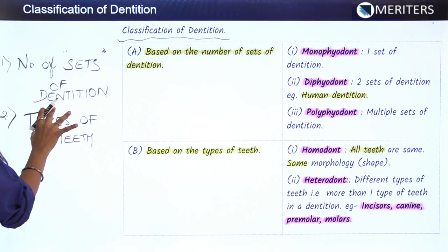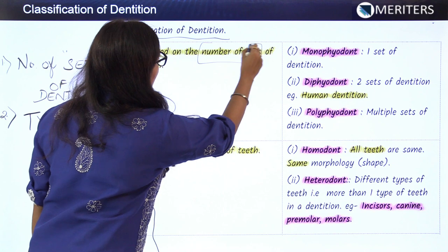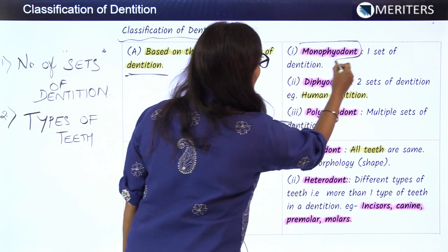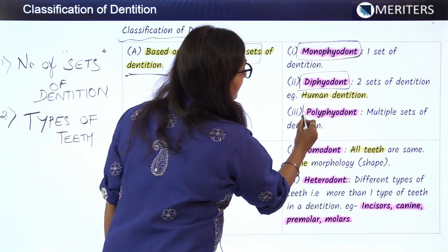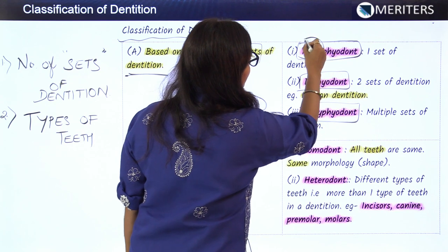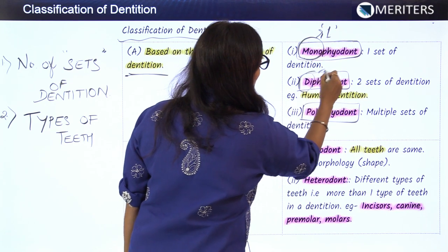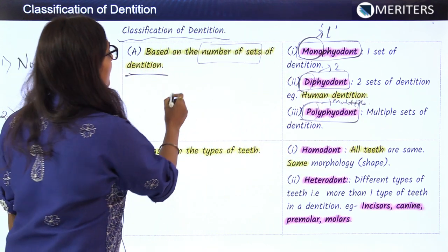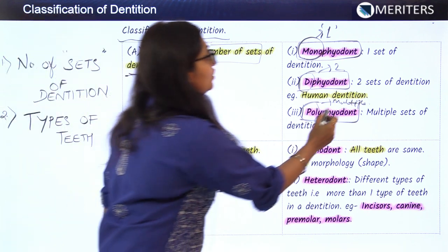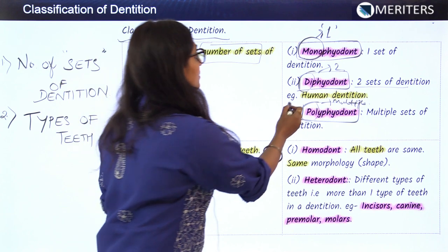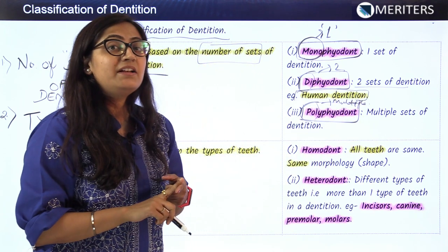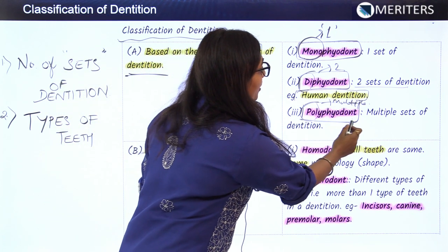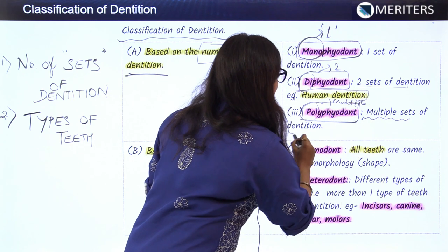Dentition is basically classified based on the number of sets of dentition — how many times throughout life a dentition has come. Accordingly, there is monophyodont, diphyodont, and polyphyodont. Mono means single or one, di means two, and poly means multiple. So monophyodont is one set of dentition. Diphyodont means two sets of dentition throughout human life, so humans come under the category of diphyodont, having a primary dentition followed by a permanent dentition.